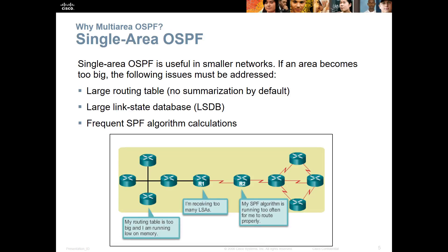Single-area OSPF is useful in a smaller network. If it becomes too big, we start getting more and more issues based on the number of routers we have. One of the issues with OSPF is large routing tables — it doesn't summarize by default — and that means larger link-state databases, which makes things slower. That means frequent spanning tree protocol algorithm calculations, because the single area of a large network makes it run a little bit slower.